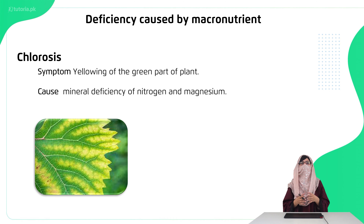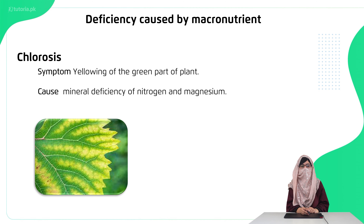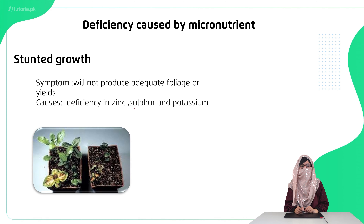Every element has a specific function, as seen in the tables. If any element is reduced in a plant, the plant will not be able to carry out a certain function, and visible changes will appear in the plant's structure — we call these deficiencies. First, let's talk about macronutrient deficiencies. When a macronutrient is missing, a disease called chlorosis is caused. If you look at this plant, yellow patches appear, showing the absence of chlorophyll molecules. Chlorosis is mostly caused by nitrogen and magnesium deficiency.